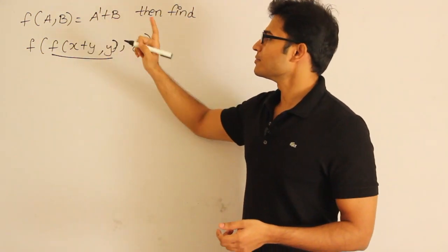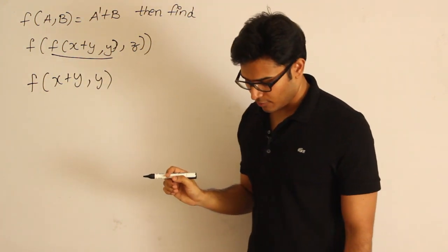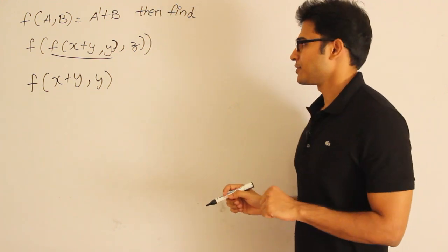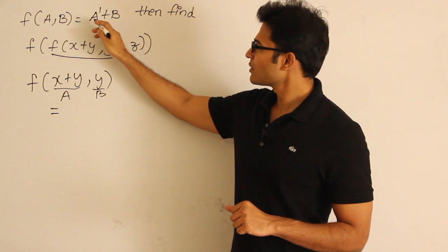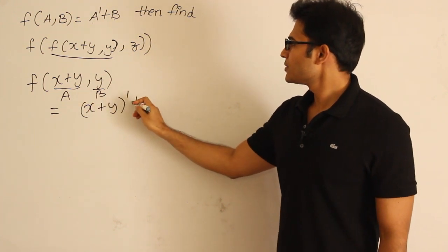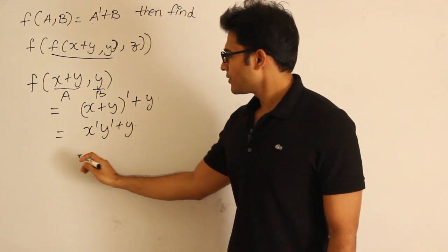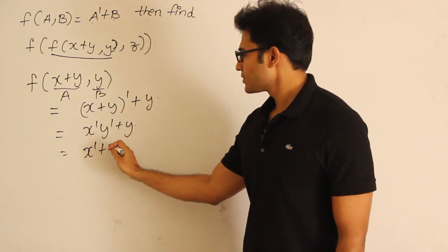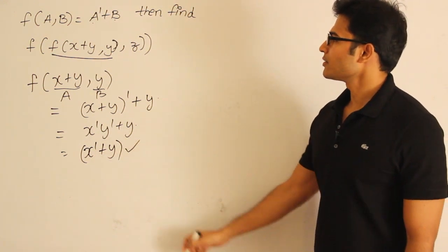So f(a, b) = a' + b. Let's find f(x+y, y). It is very important to understand this because we are going to do many questions on nested functions. If a = (x+y) and b = y, then a' + b becomes (x+y)' + y, which is x'y' + y. Distributing the OR over AND gives (x' + y)·(y + y'), which simplifies to x' + y.